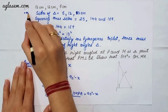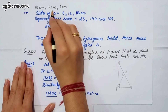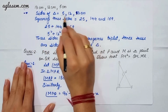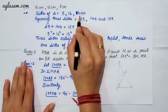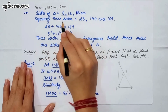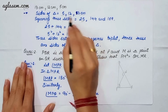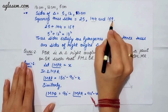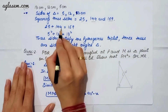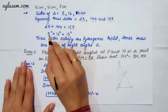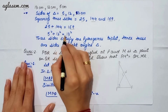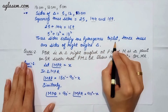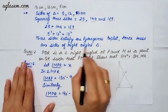Moving to our fourth part which says 13 cm, 12 cm, 5 cm — that is 5, 12, 13 cm. Squaring these sides: 5² = 25, 12² = 144, 13² = 169. So, 25 plus 144 equals 169, meaning 5² + 12² = 13². Therefore, these sides satisfy the Pythagorean triplet. Hence, these are the sides of a right angle triangle.